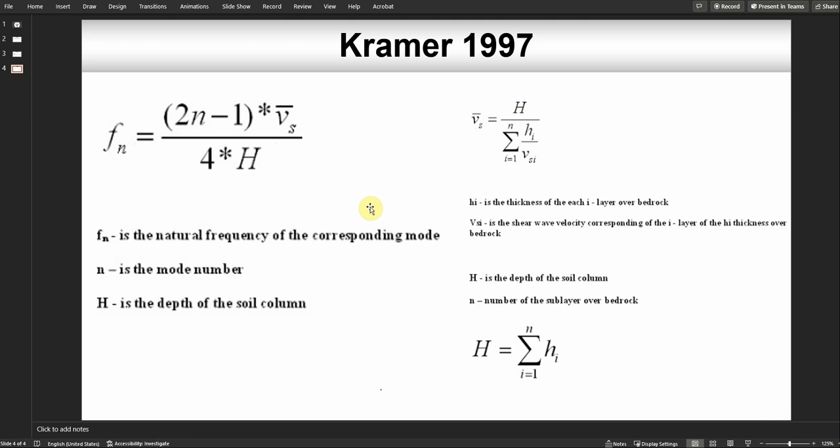H is the thickness of each layer if you have different layers, vs is shear wave velocity, fn is natural frequency, n is the mode number, and H is the depth of the soil column.